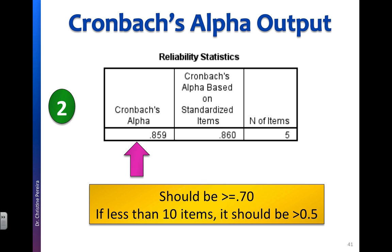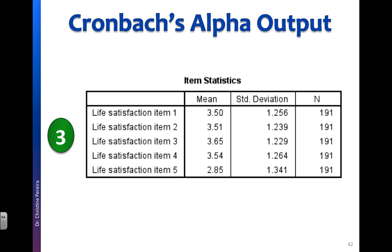Maybe there are items that should be deleted from the scale. Our next output is the item statistics. Here we can see the mean and standard deviation as well as the sample size for each of the items on our scale. This is the same as if we had run a frequencies or descriptive statistics procedure to produce means and standard deviations.